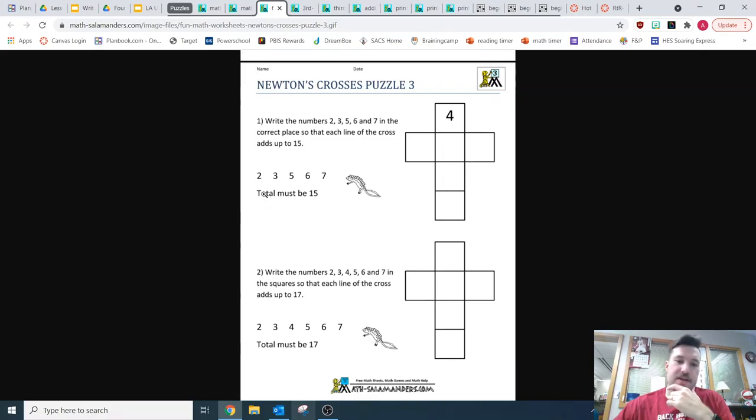And then down here, you've got all blanks. So you're going to have to find out how to make each side or each row or column add up to 17 here and 15 here.